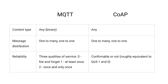Finally, MQTT provides three qualities of service — QoS 0, 1, and 2 — improving reliability. CoAP can confirm message delivery, which is roughly equivalent to QoS 1 in MQTT. Non-confirmable messages in CoAP have no acknowledgment, similar to QoS 0 in MQTT.